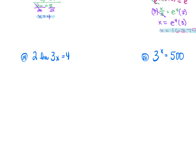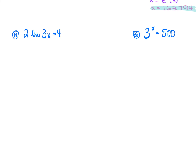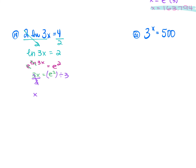For number 19: 2·ln(3x) = 4. Divide both sides by 2 to isolate the LN: ln(3x) = 2. Raise e to both sides: e^(ln(3x)) = e². E and LN cancel: 3x = e². Divide each side by 3. Using your calculator, e² ÷ 3 ≈ 2.463.